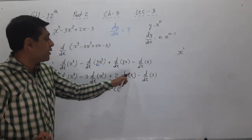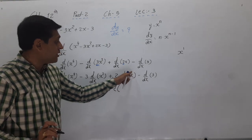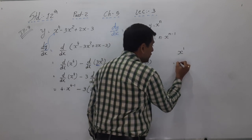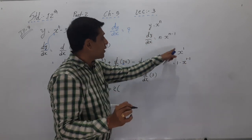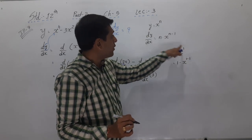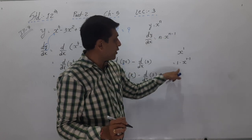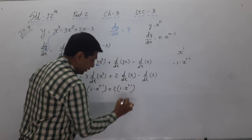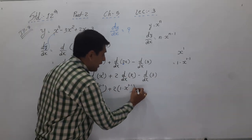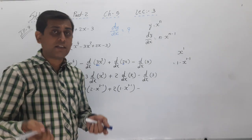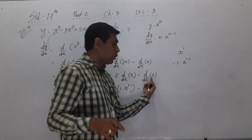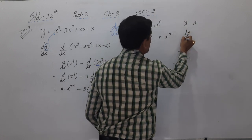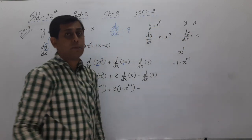For 2-mark sums, we have to write all the steps — these three steps are compulsory. This chapter is somewhat difficult because it is originally a science chapter, but after 2017 it is in the 12th commerce syllabus. Please write down this. If you don't understand anything, please watch this video again and again. Illustration number 7 is complete. Now we start illustration number 8.